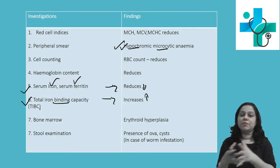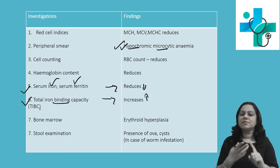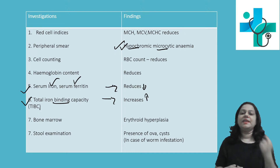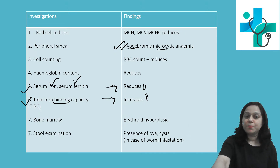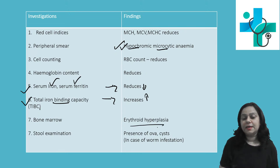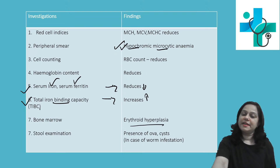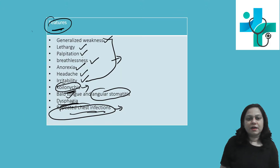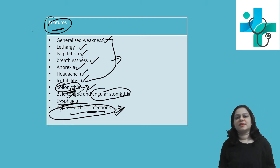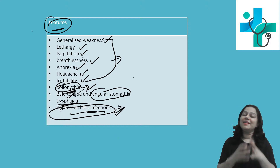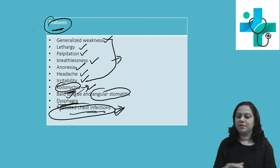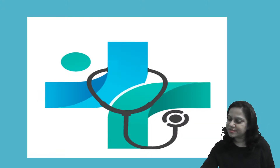To summarize key features: iron deficiency anemia causes hypochromic microcytic anemia; serum iron and serum ferritin level decreases; total iron binding capacity increases; bone marrow examination shows erythroid hyperplasia. Clinically, koilonychia and repeated respiratory infections are the common features. Iron deficiency anemia is the most common nutritional deficiency anemia.